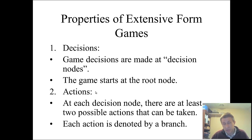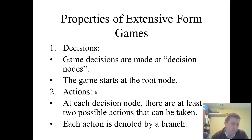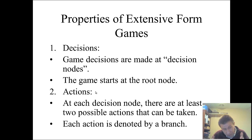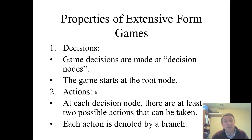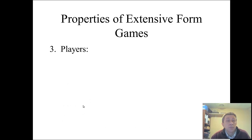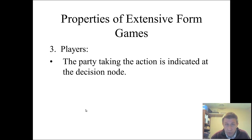For example, if a player goes right or left, you indicate that on each branch. Depending on the context — if it's lawyers, you could write 'sue' or 'not sue'; if it's siblings, 'share' or 'not share' — whatever it is gets written right there on the branch. In a payoff matrix you write it in the row or column, but in a tree diagram you write the actions on the branches. Players are indicated at the decision node — who is making the particular decision is written there.